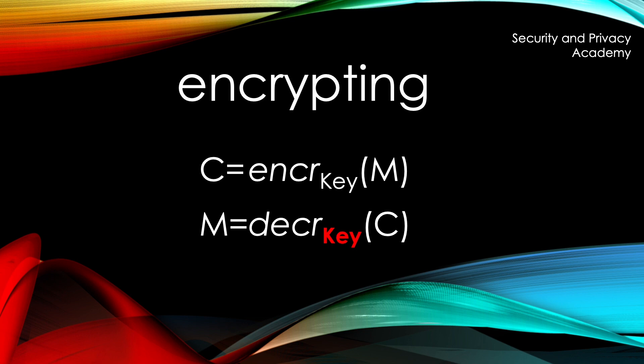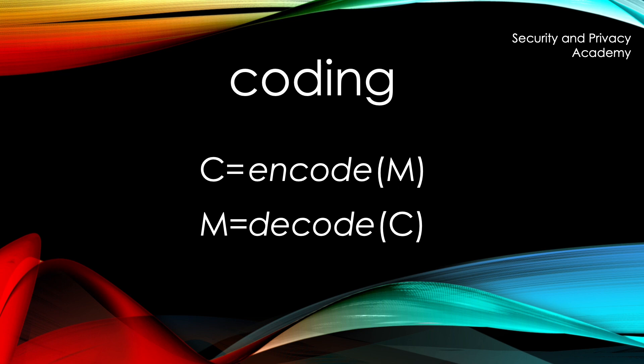Coding, on the other hand, works without a key, meaning I don't need a key to encode a clear text nor to decode the ciphertext. This means that everyone who receives the ciphertext can decode it and it is not meant to be a safeguard against eavesdroppers.